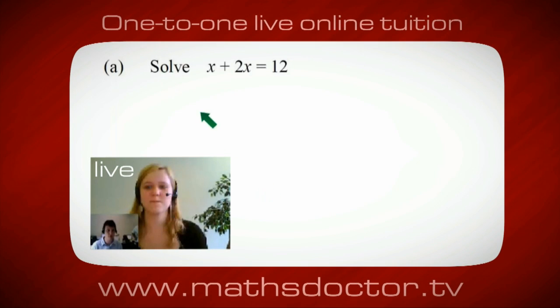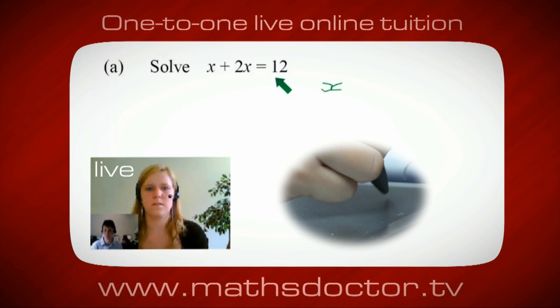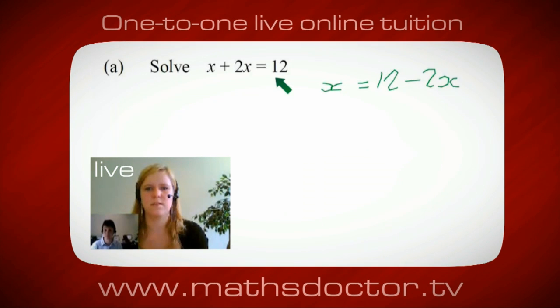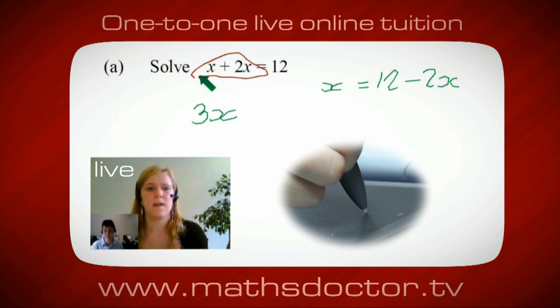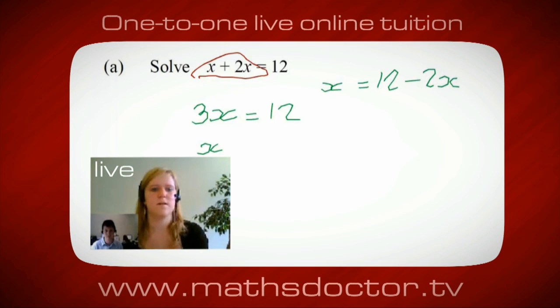OK, Marie, so let's have a look at this one. So solve x plus 2x equals 12. So what do you think you do first? Well, I want x on its own, so I would put x equals 12 minus 2x. OK, so a lot of the time we want to get x by itself, but what we want to do first is get all of these x's together. So can you see anything we can do with this? Get all these together in one place. Oh, OK, it's 3x, isn't it? Yeah, absolutely. So 3x equals 12. Oh, and so x equals 4. Brilliant, spot on, well done.